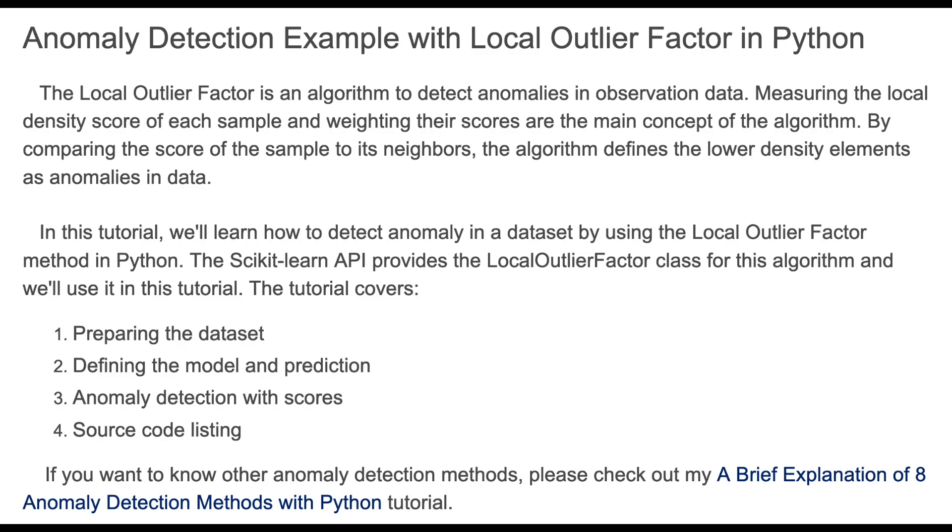In this tutorial we'll briefly learn how to detect anomaly in a dataset by using the Local Outlier Factor method in Python. The scikit-learn API provides the LocalOutlierFactor class for this algorithm and we'll use it in this tutorial. Here we cover preparing the data, defining the model and prediction, anomaly detection with scores, and source code listing.